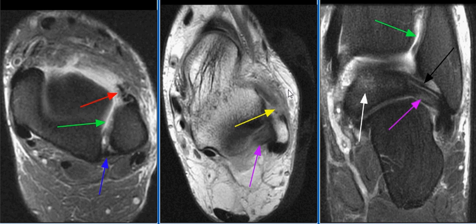There is a high-grade sprain of the anterior talofibular ligament with partial tear near its fibular attachment, as seen on this image with the yellow arrow.